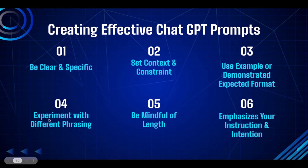The fourth aspect: experiment with different phrasing. Try experimenting with different phrasing or variations of prompts to explore how they influence the model's responses. Small changes in wording can often lead to significantly different outputs, so iterate and refine your prompts to achieve the desired outcome. This is the most challenging part — you'll do a lot of trials and errors. But if you're serious about learning prompt engineering, that's what it takes. The only way to get better is by practicing more every day.